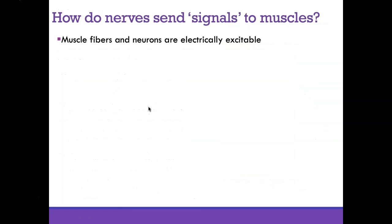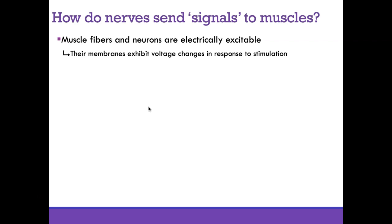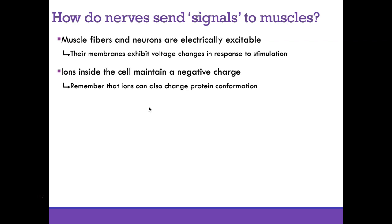How do nerves send signals to muscles? Muscle fibers and neurons are both electrically excitable — both can be stimulated by electricity. This is largely due to special proteins on their membrane that can change voltage, allowing voltage changes in the cell in response to stimulation. Ions inside the cell normally maintain a negative charge, and ions can also affect protein shape and activity.